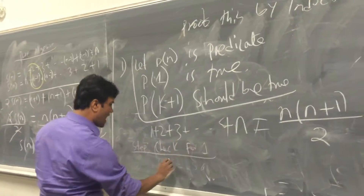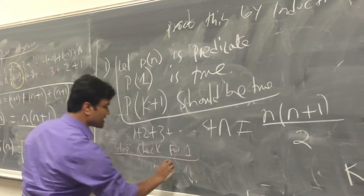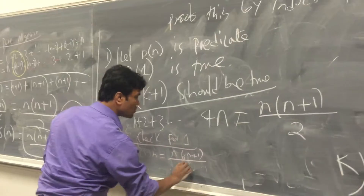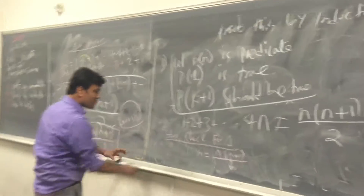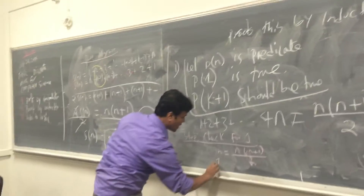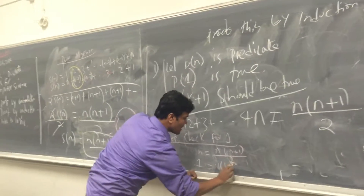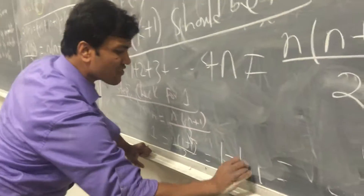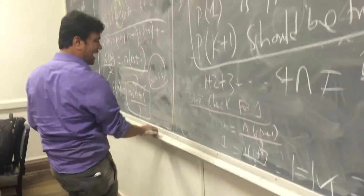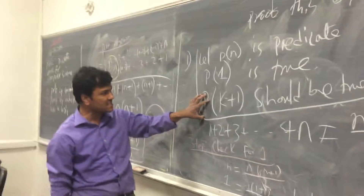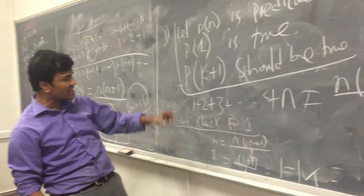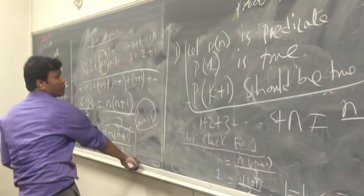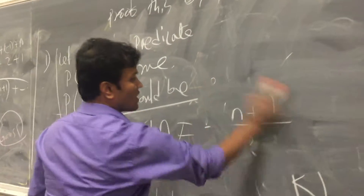Let's check for n equals 1. We plug in n equals 1 into n times n plus 1 over 2, which gives 1 times 1 plus 1 over 2 — that is 1 equal to 1. Check — it works for n equals 1. Now our hypothesis is: if it works for n, it better work for k plus 1, and that's what we're going to try to prove.